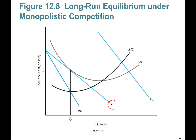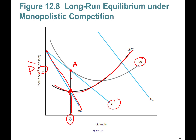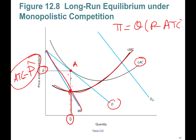In the long run for monopolistically competitive companies, the demand curve is tangent to the long-run average cost curve at point A. Marginal revenue equals long-run marginal cost, giving the optimal quantity. Going up to the demand curve gives the price, and hitting the average total cost curve gives the same point — price equals ATC. Therefore, profits equal quantity times (price minus ATC), which equals zero.